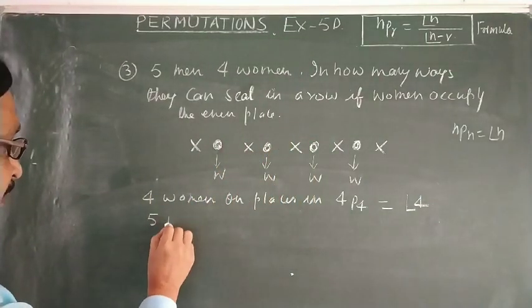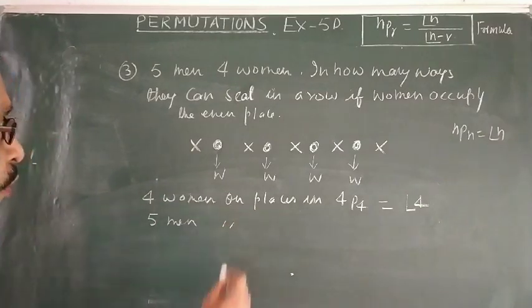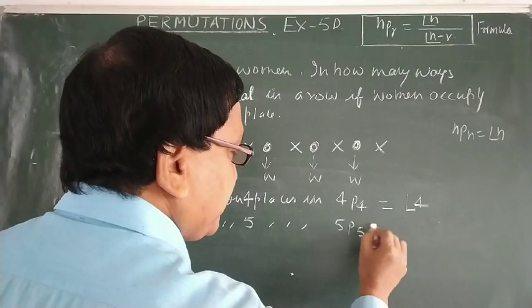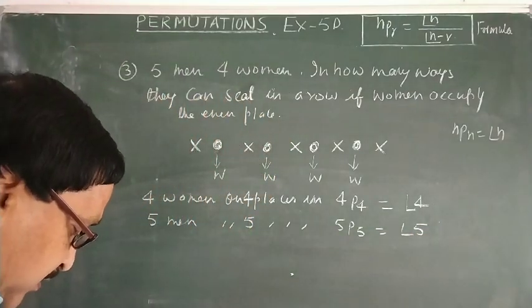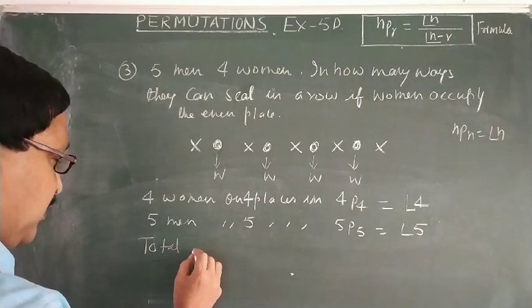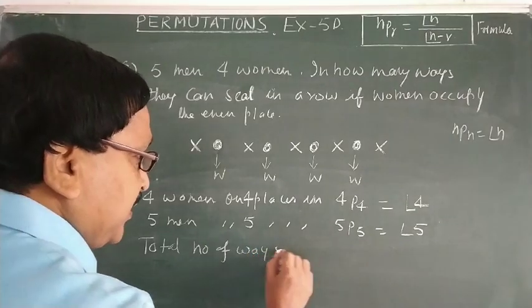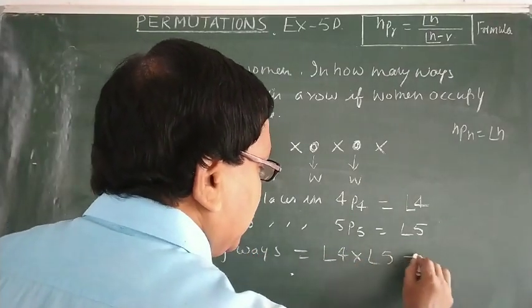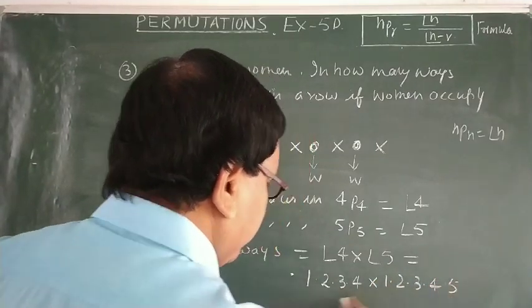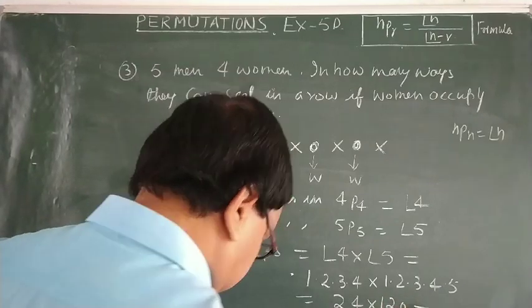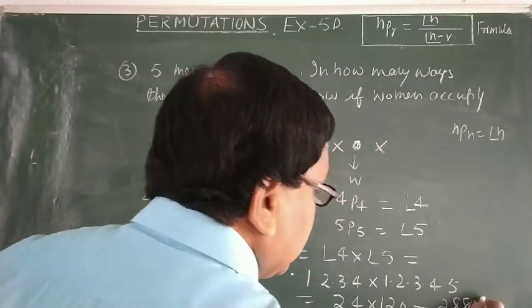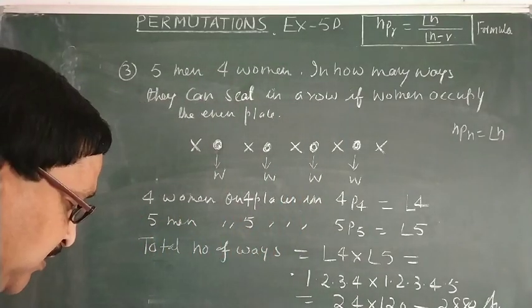Similarly, 5 men on 5 places in 5P5 = 5! ways. By the multiplication rule, the total number of ways = 4! × 5! = 24 × 120 = 2880.